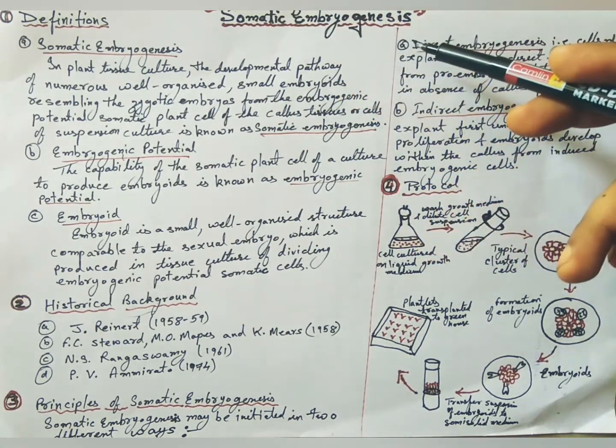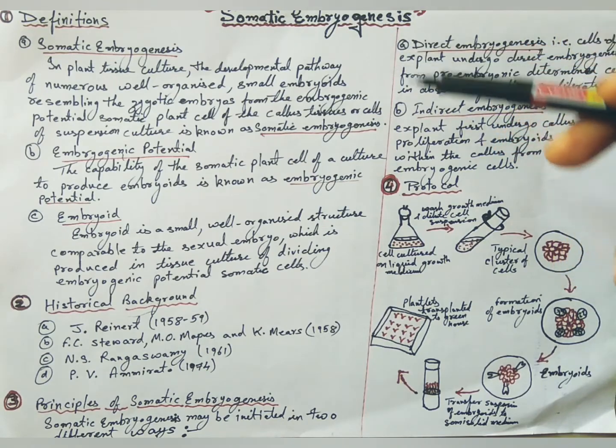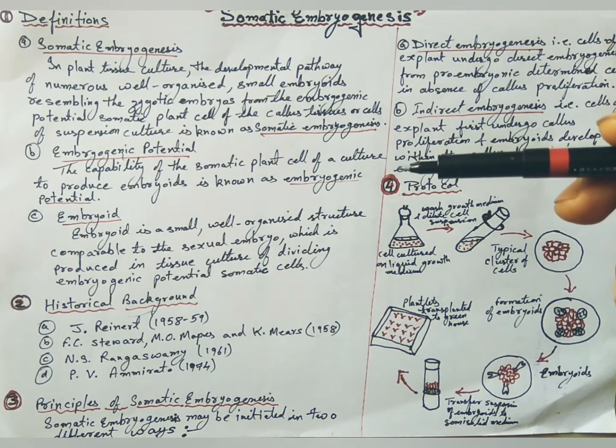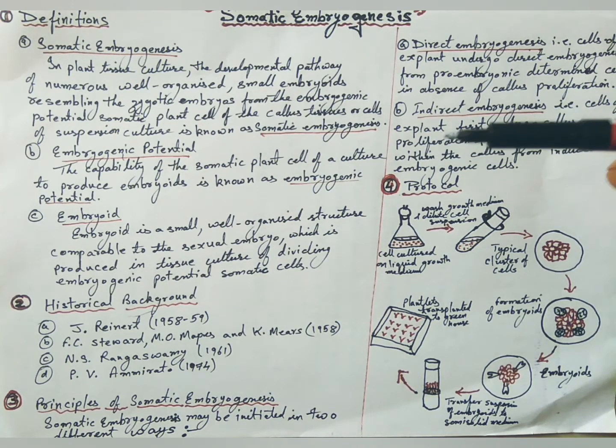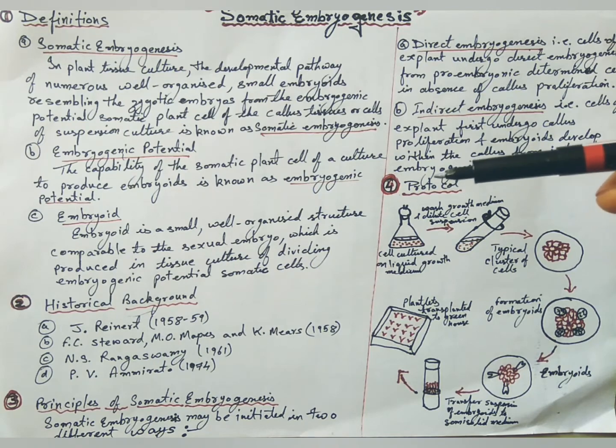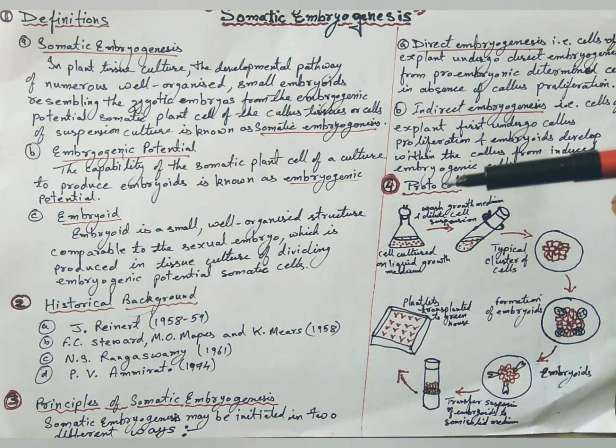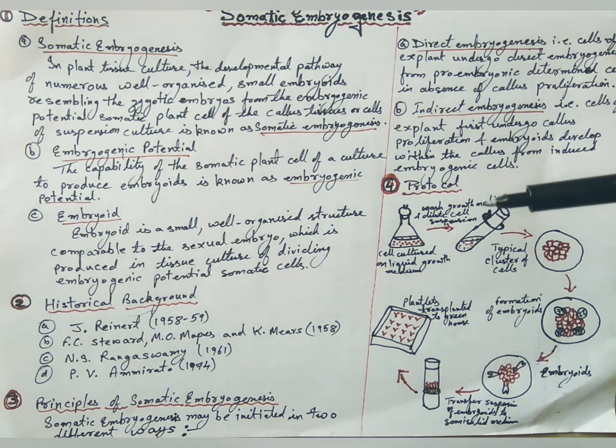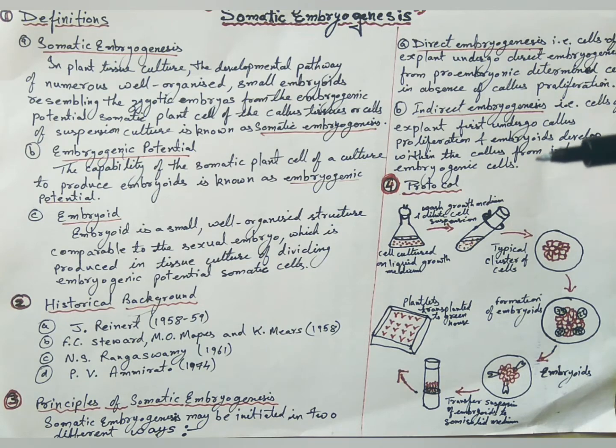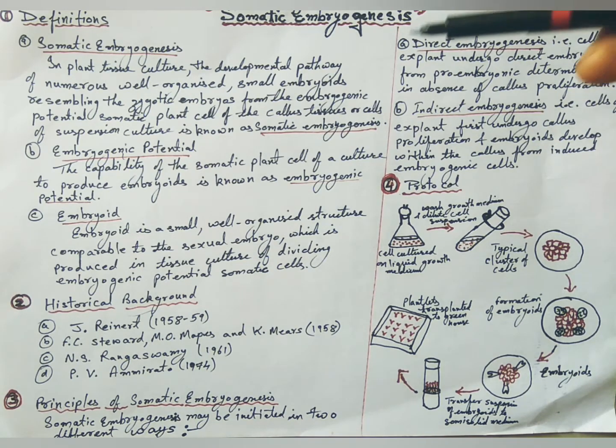In angiosperms, ovules are developed within the ovary. Within the ovule, a sac-like structure known as embryo sac lies embedded in the nucellus. The embryo sac represents the female gametophyte of angiosperms. The ovule contains a haploid egg cell or ovum.